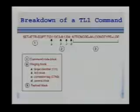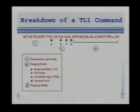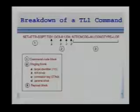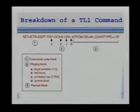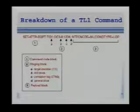In this example of a TL1 command, number one shows the command that is going to be executed: set attribute equipment. Number two is called the staging block, which is the equipment name, the port identifier, and the sequence number. The sequence number is like the basic programming language numbering scheme of 10-20-30. Number three contains the parameters of the command. In this example, it's showing a major alarm severity because of loss of frame.